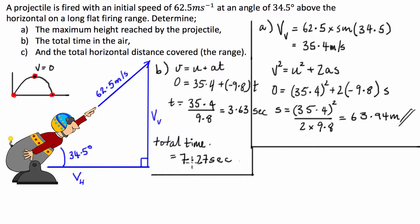All right. So the last part, the total horizontal distance covered, so the range of the projectile. Now, so for C, let's just do it in a different color. We've got C. Now for the range,